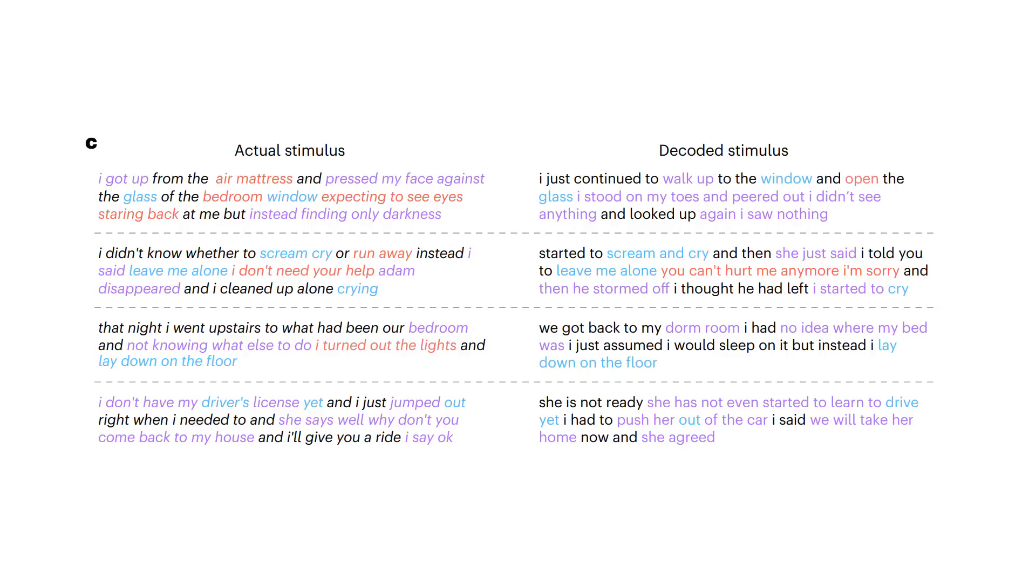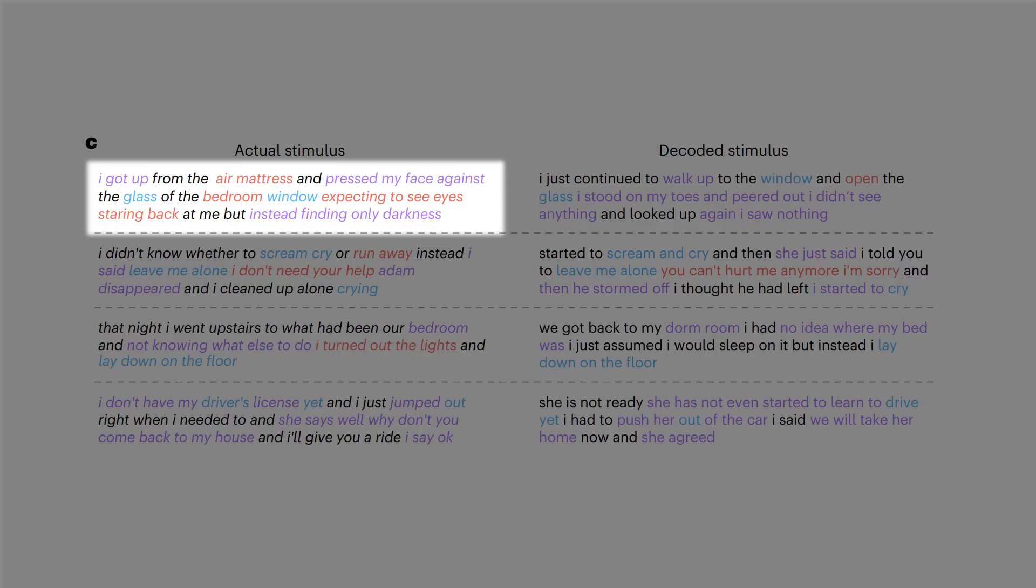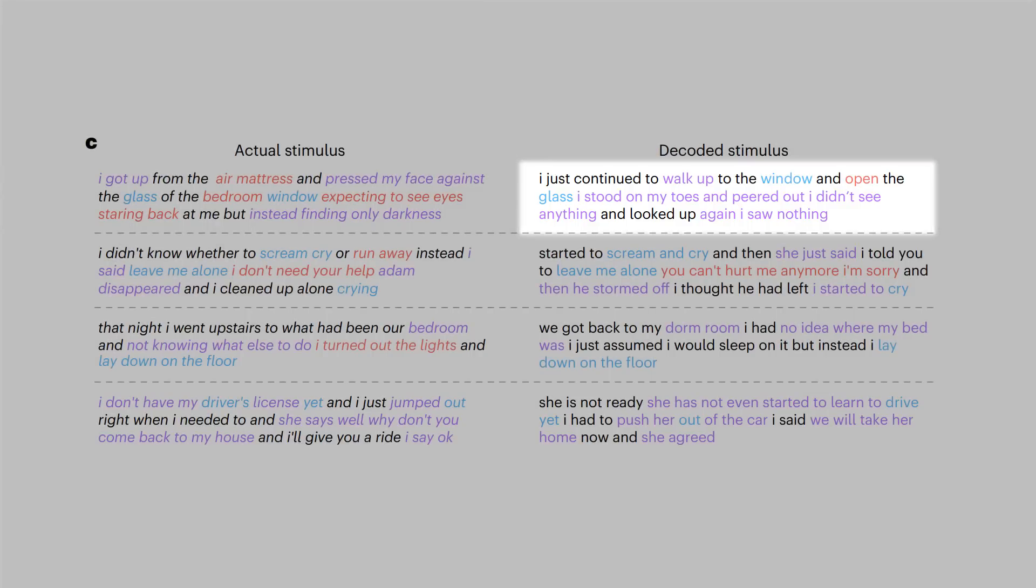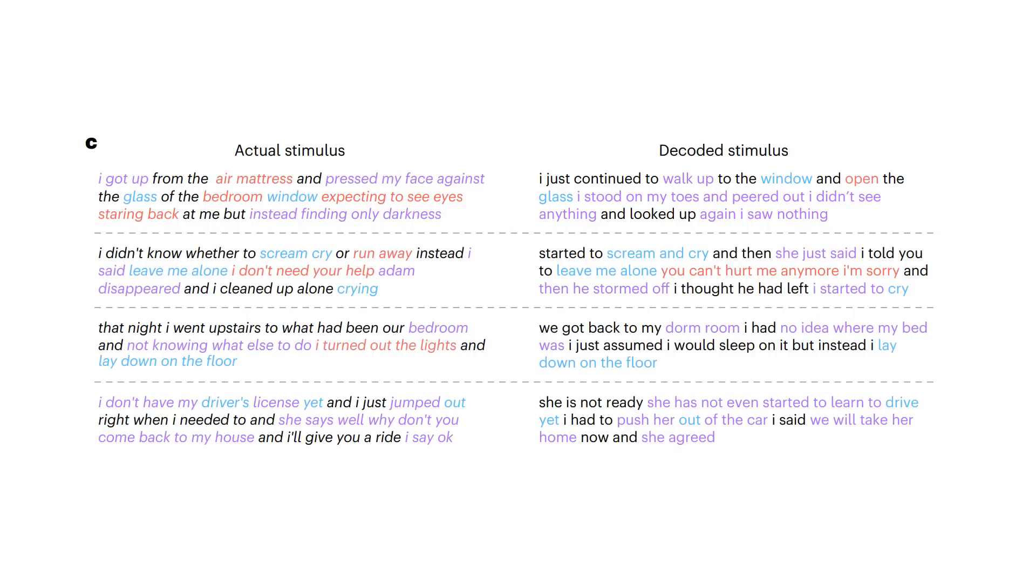here's some examples of what the AI model was able to reconstruct that the person was hearing. For example, where the actual stimulus said, I got up from the air mattress and pressed my face against the glass of the bedroom window, expecting to see eyes staring back at me but instead finding only darkness. The decoded stimulus, what the AI thought the person heard based on the scan, said, I just continued to walk up to the window and open the glass. I stood on my toes and peered out. I didn't see anything and looked up again. I saw nothing. Not completely accurate, but we're getting there.